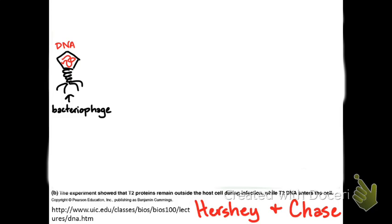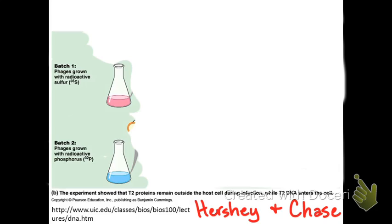And phages are very tiny compared to bacteria. They're much lighter. And so what they did was they grew two different flasks of phage. And one flask was full of radioactive sulfur. And so those phages incorporated sulfur into their proteins, because that's where you find sulfur. The other grew in radioactive phosphorus and incorporated that phosphorus into its DNA.